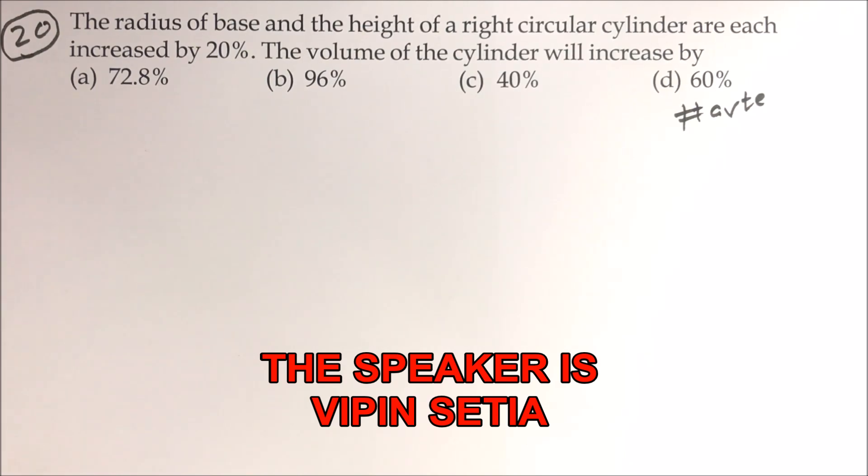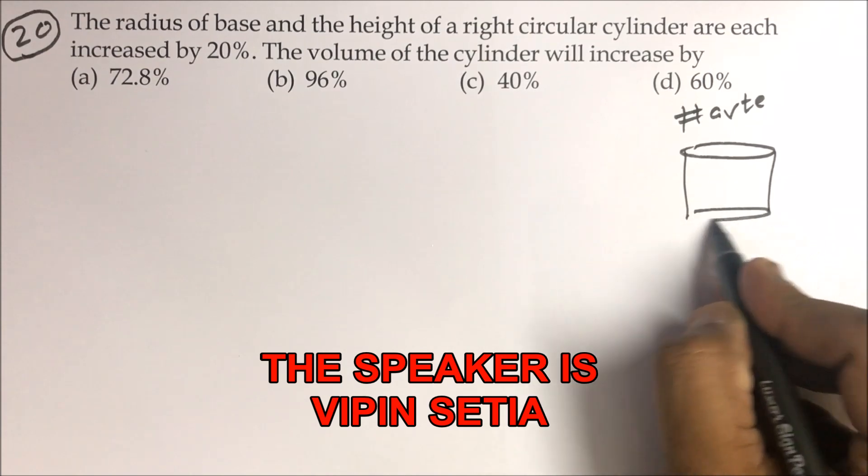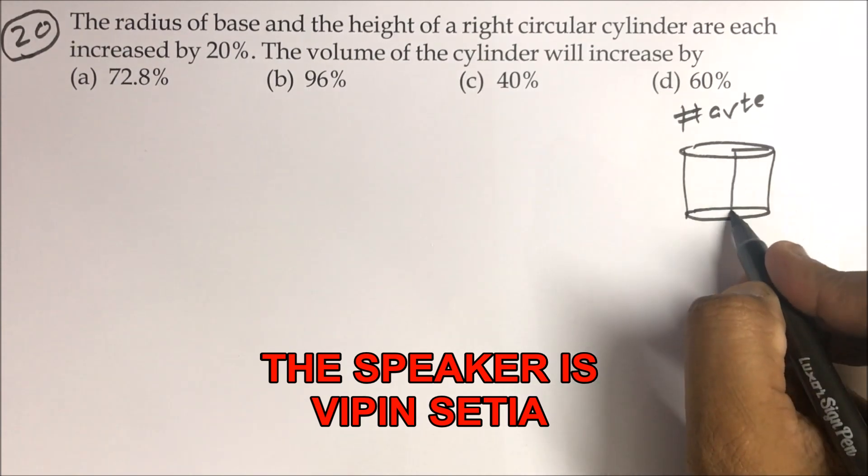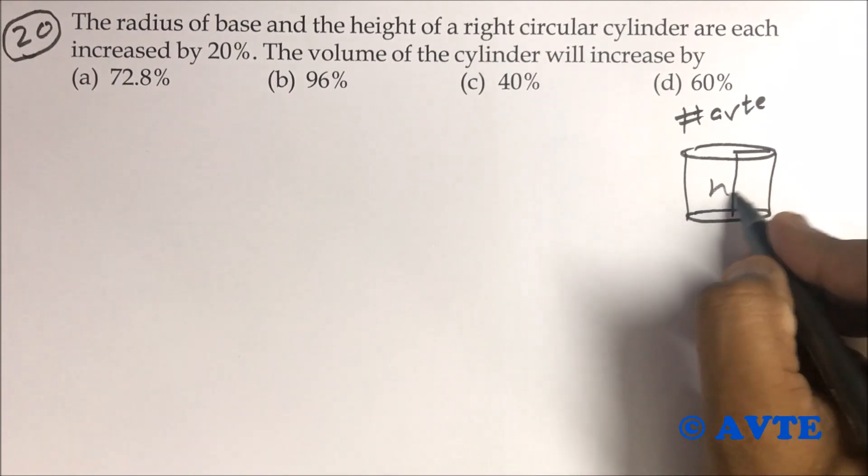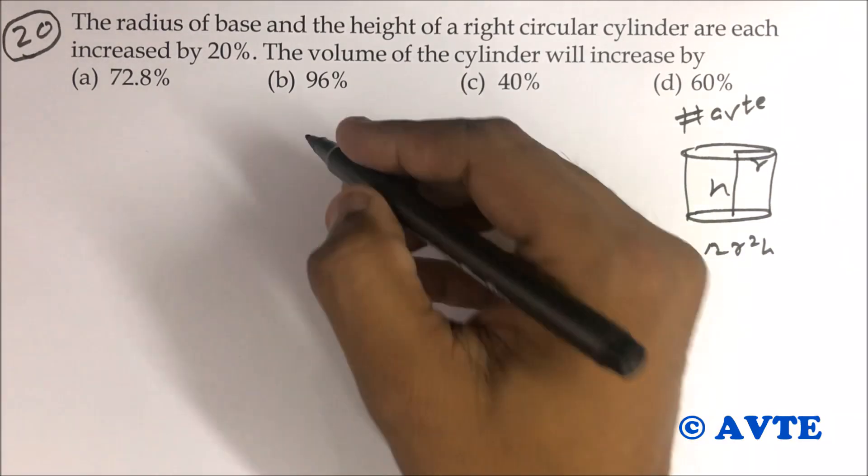What will be the volume of new cylinder? So there are four options here. We go with the old cylinder. You know that this is radius, this is height, and the volume is pi r square h.